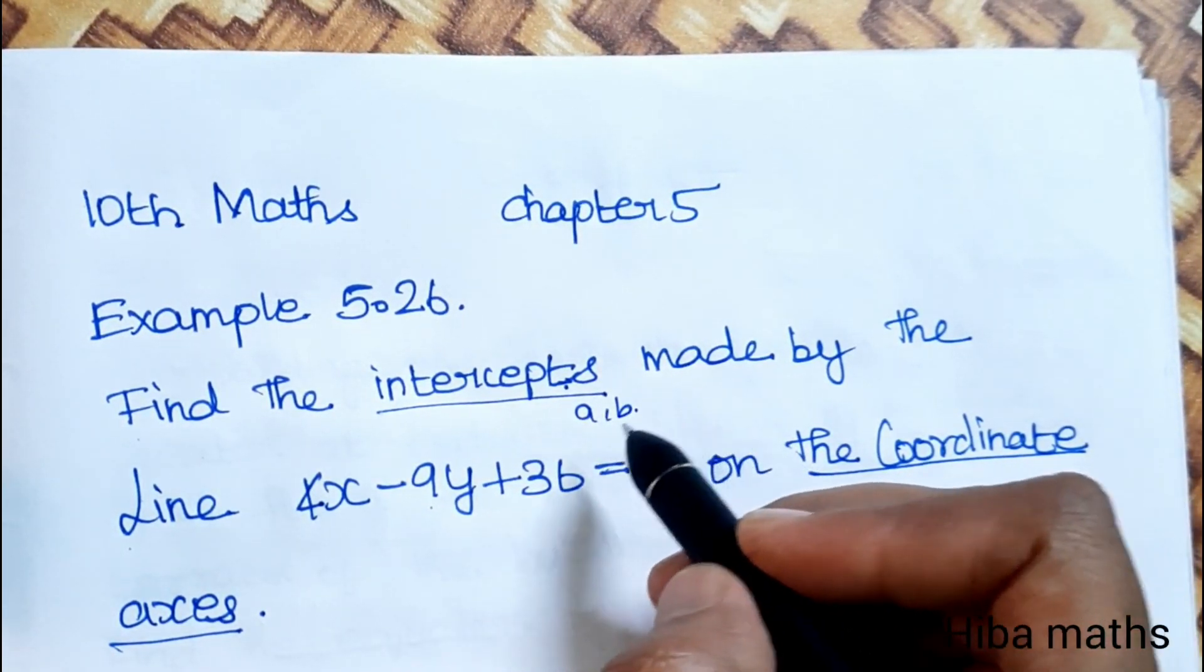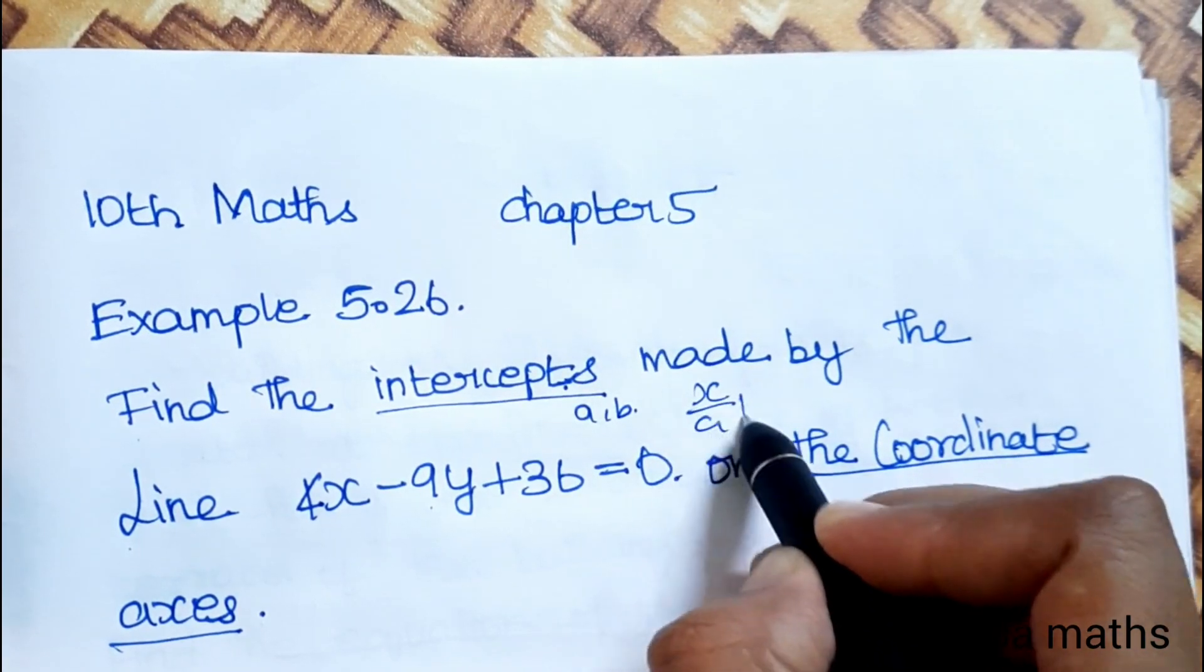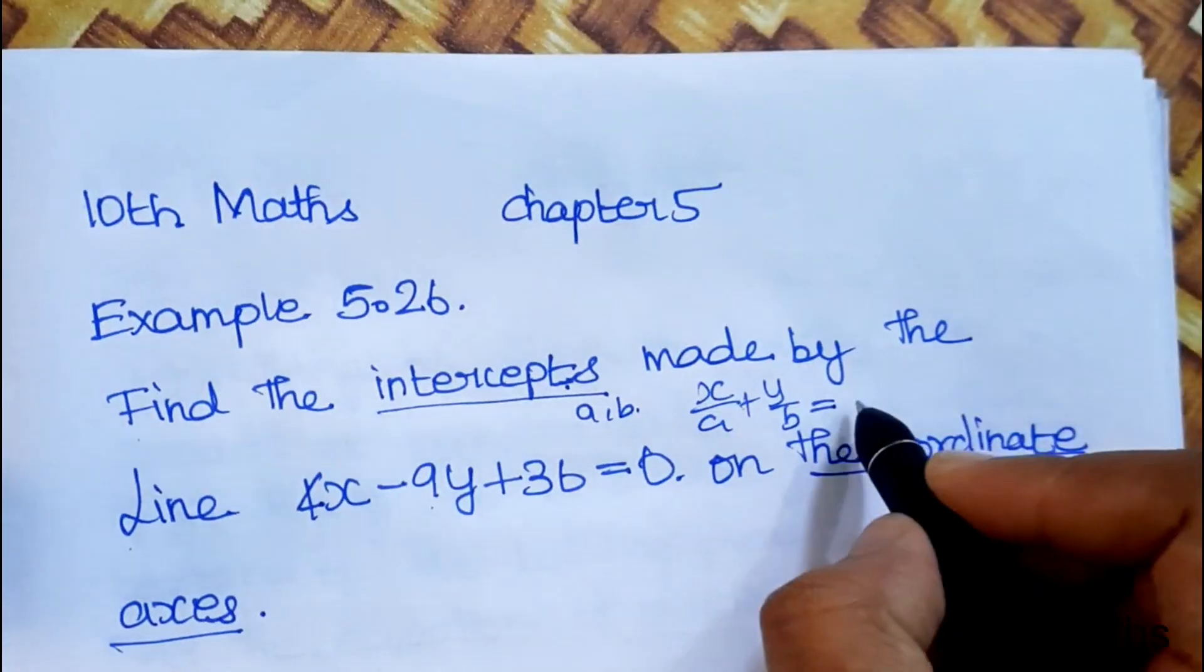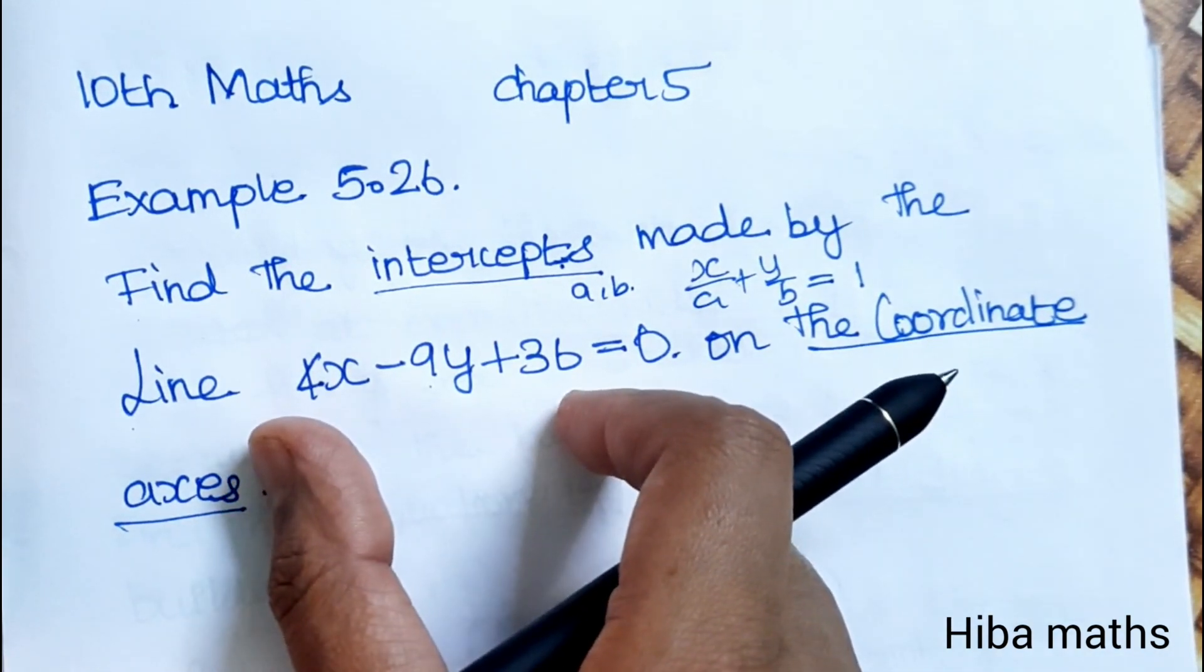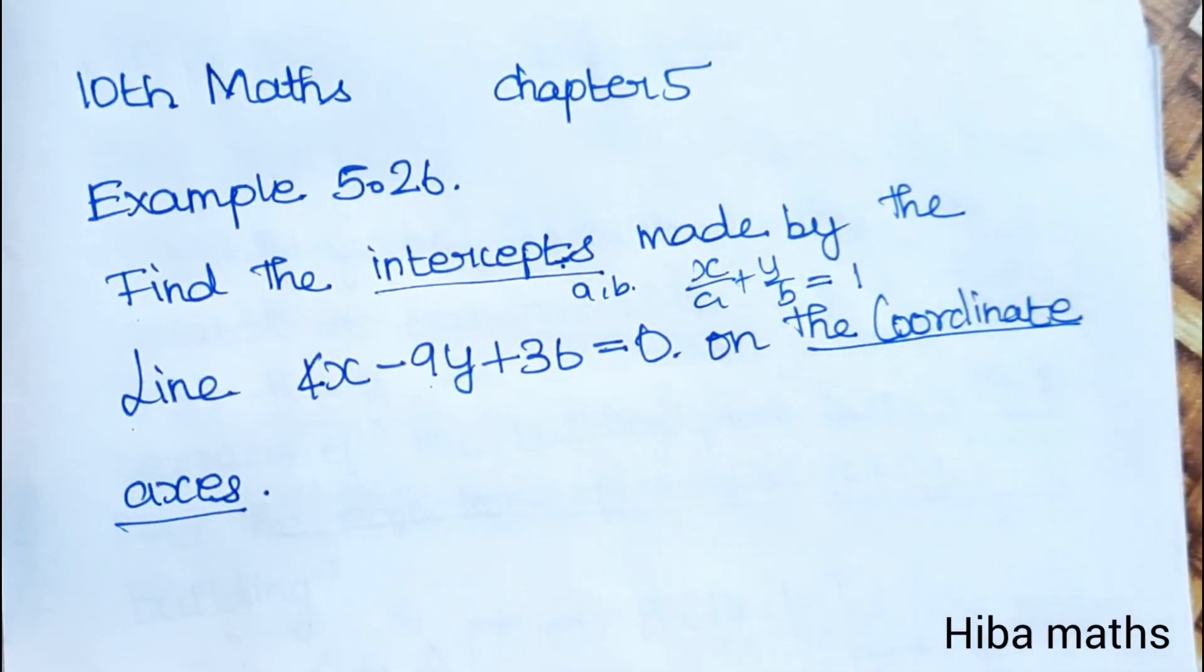So the intercept form is x by a plus y by b equal to 1. We need to convert the equation to this format to find the intercepts.